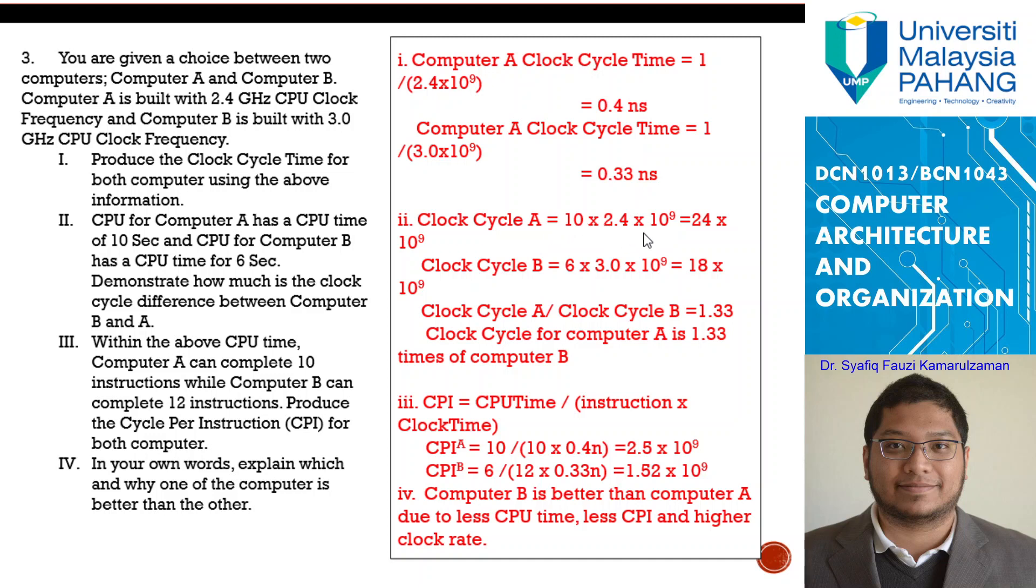Here is 10 seconds times the frequency. 10 seconds times the frequency, which is 24 times 10 power of 9. Clock cycle B is 6 times 3.0 times 10 power of 9, equal to 18 times 10 power of 9. Here CPU time might be representing how long it takes to complete one instruction. In this case, let's consider if they want to complete one instruction, they need to have 10 tick-tocks at 2.4 gigahertz. And here, you need 6 tick-tocks at 3.0 gigahertz.